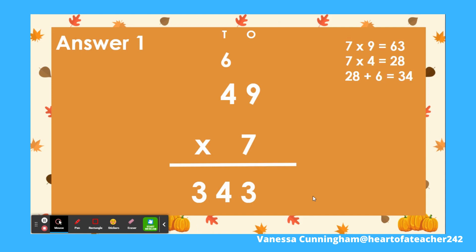We have multiplied the ones. 7 times 9 equals 63. So we have 63 ones. We are going to regroup 63 ones into 6 tens and 3 ones. We put the 3 ones below and the 6 tens above in the tens column.